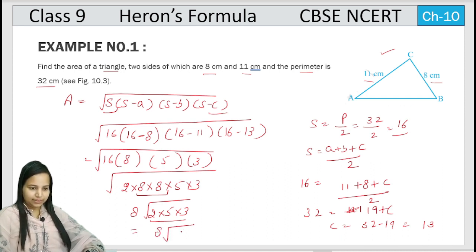So it will become 8 and 30. So answer is 8 root 30 centimeter square.